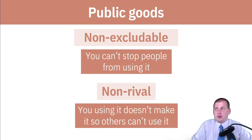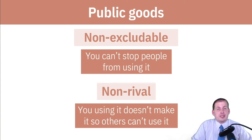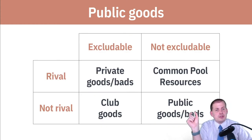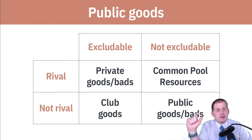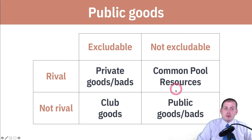Because public goods are non-excludable and non-rival, there's no way to make a profit from them. If people don't buy it, they can still use it, and their use doesn't take it away from others. As a result, public goods are under-provided in society — private companies don't want to provide them because they can't make money off of them.